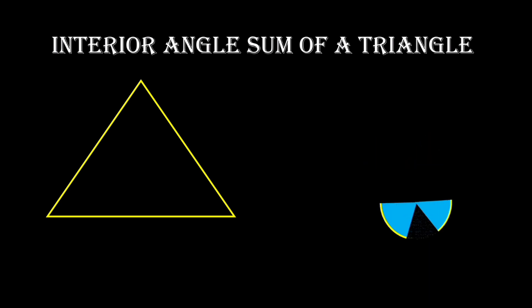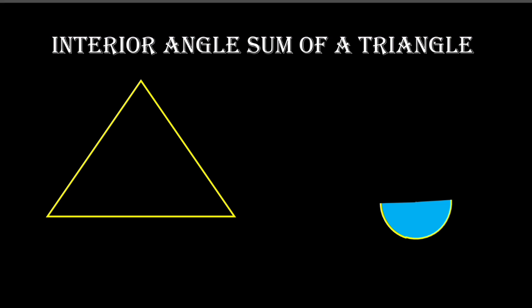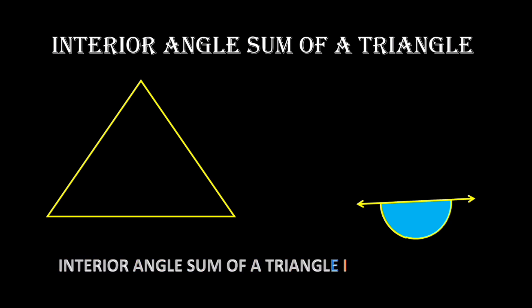When we bring together all three interior angles of a triangle, we get a straight angle, which is equal to 180 degrees. So the interior angle sum of a triangle is 180 degrees.